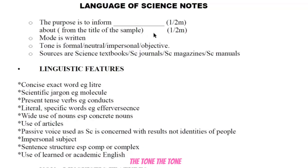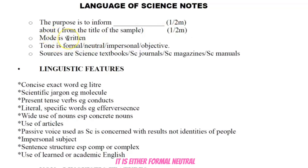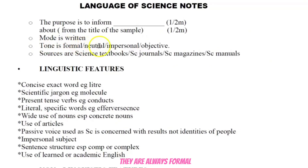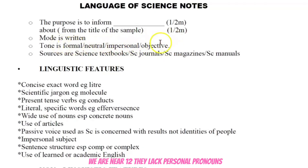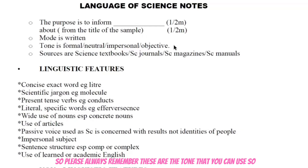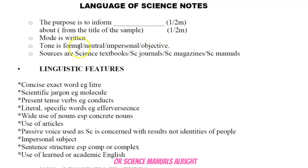The tone is very important. It is either formal, neutral, impersonal, or objective — all of these share the same sentiments. They are always formal. Formal texts lack personal pronouns, lack slang, and lack personal writing features. Always remember: the sources for language of science are usually science textbooks, science journals, science magazines, or science manuals.